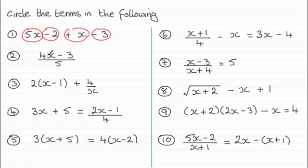With number 2, with this one, 4x minus 3 all over 5. We end up with one term, remember, when you've got a division like this.